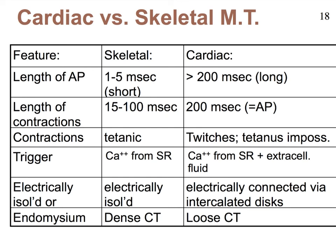Our heart must regularly relax, otherwise it would not be able to act as a pump. Finally, the endomysium of heart muscle is actually loose connective tissue — remember that's the connective tissue that wraps itself around each muscle cell. In skeletal muscle tissue that tends to be dense connective tissue. So this wraps up the microscopic anatomy of the heart, as well as prior to that the external anatomy and blood flow. We're finally ready to dive into the physiology of the heart.